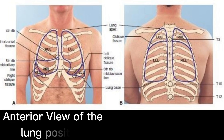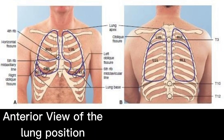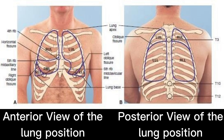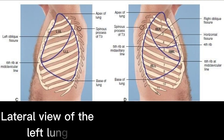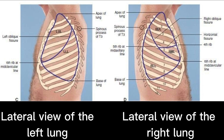For the position of the lungs, we have the anterior view of the lung position, the posterior view, the lateral view of the left lung, and the lateral view of the right lung.